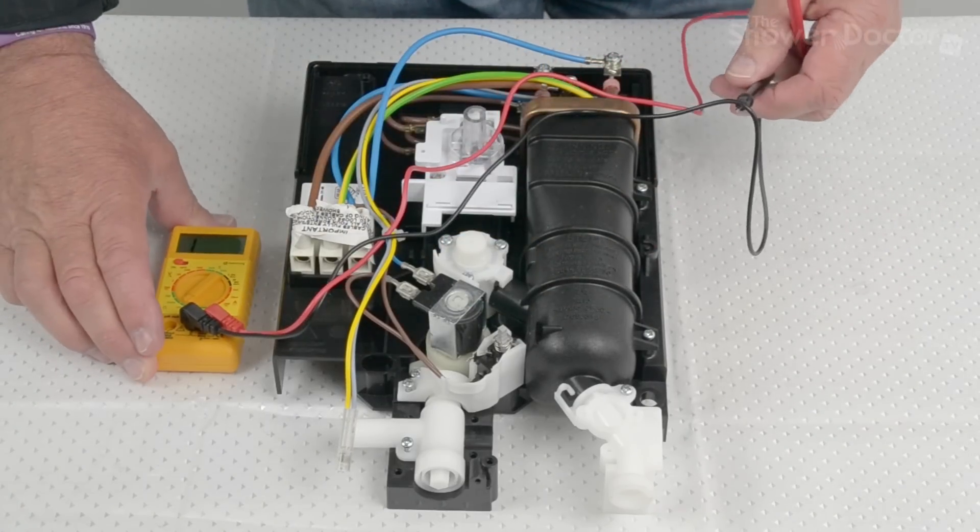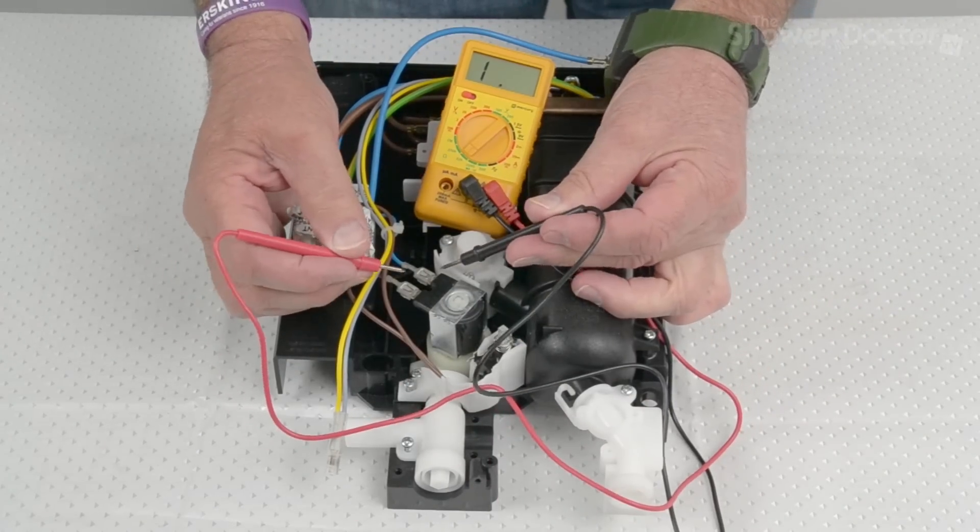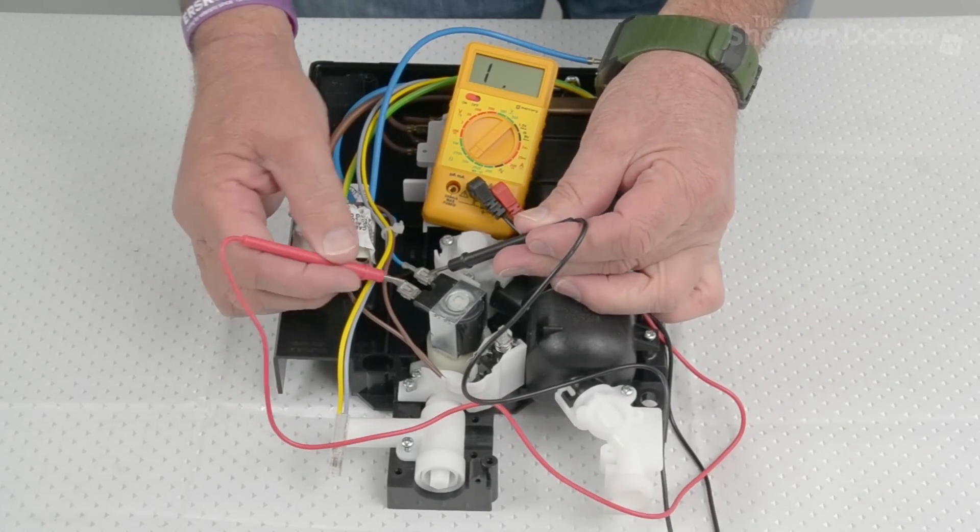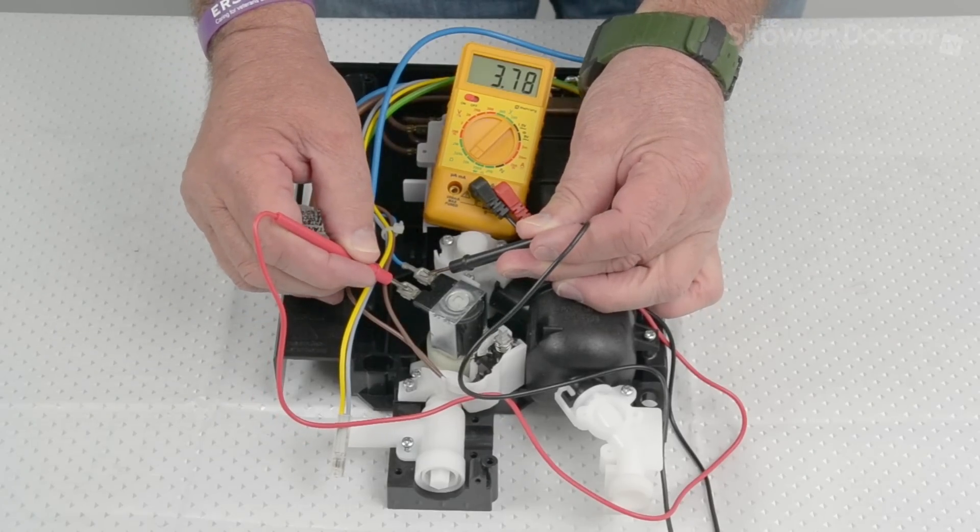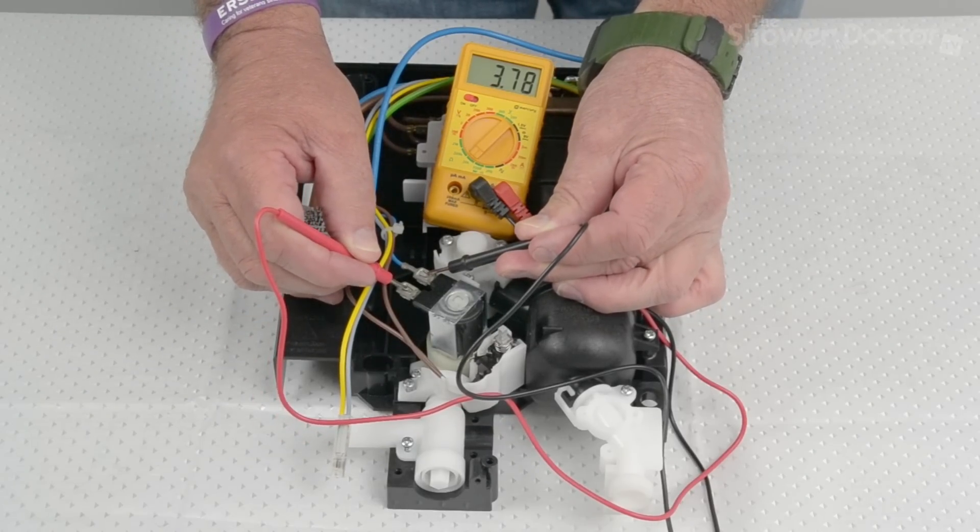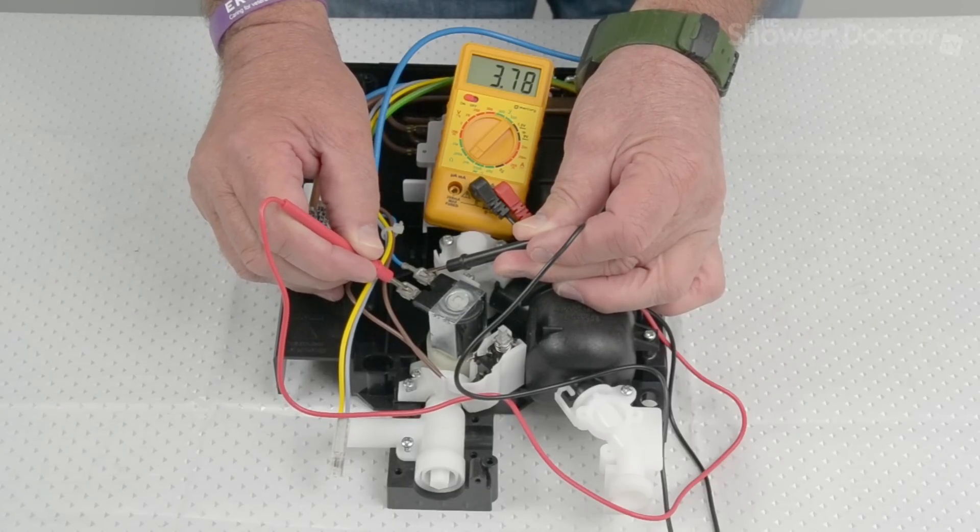And so I think we'll be able to leave that still there so you can see this. The polarity doesn't really matter as far as this is concerned because we're measuring resistance. And this solenoid has a resistance of 3.7 ohms. Basically anything over 3.4 and the solenoid is good.